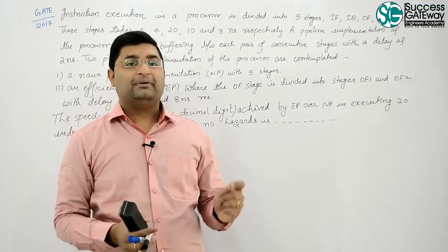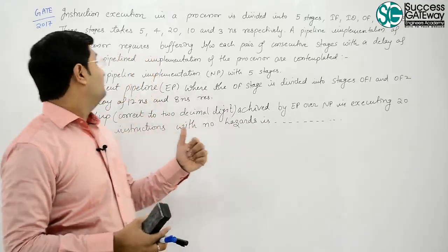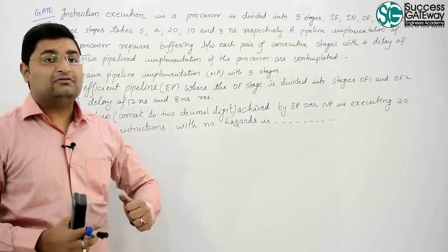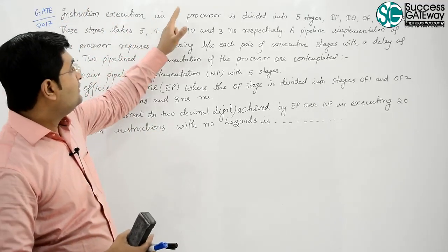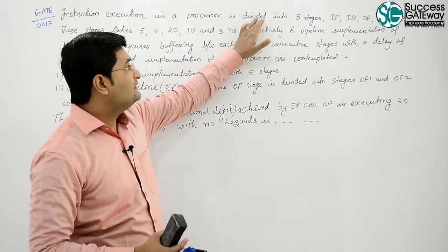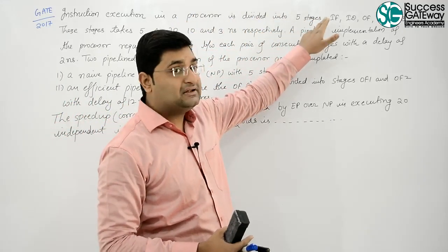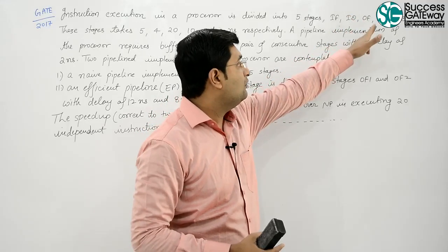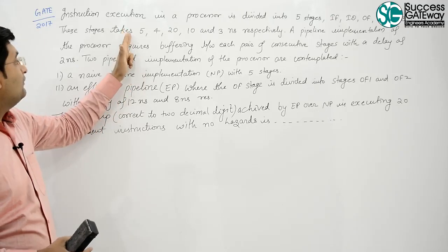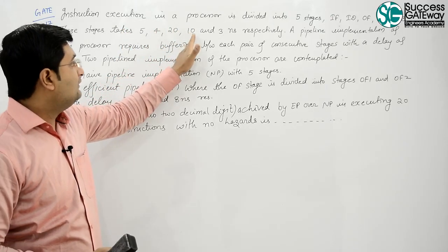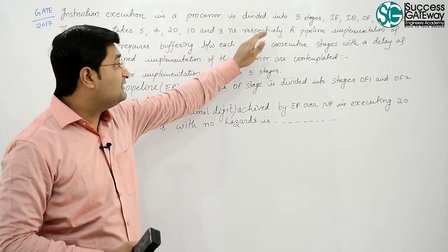Now come to the next example on pipelining. It is a GATE 2017 question. Instruction execution in a processor is divided into 5 stages: IF, ID, OF, EX and WB. These stages take 5, 4, 20, 10 and 3 nanoseconds respectively.